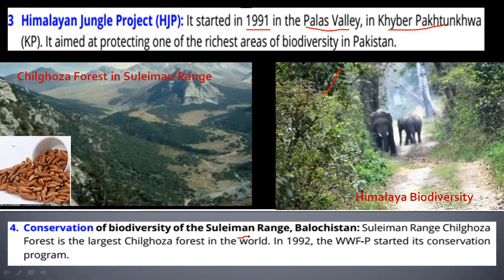The Conservation of Biodiversity of Suleiman Range, Balochistan focuses on the Suleiman mountain range where there are forests and great variety of biodiversity. In Suleiman Range, Chilagoza forest is present — you can see it in this diagram. This is the largest Chilagoza forest in the world. In 1992, WWFP started its conservation program because plant biodiversity is also under threat. Chilagoza trees are threatened and depleting very rapidly. These are very healthy and nutritional Chilagozas found from these forests.